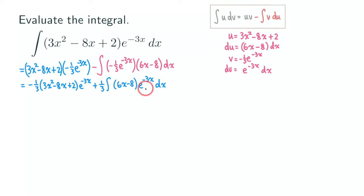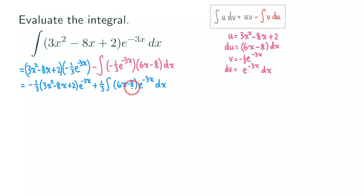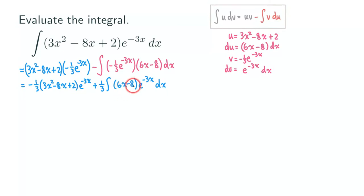Now let's look at this remaining integral. We still have a product of a polynomial — in fact, this is a linear function now — times an exponential function, e to the negative 3x. So we are going to do integration by parts a second time.